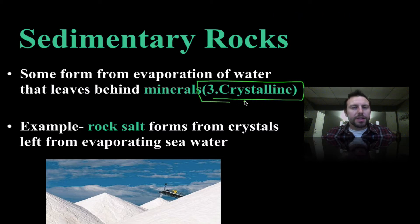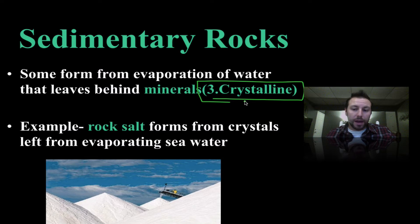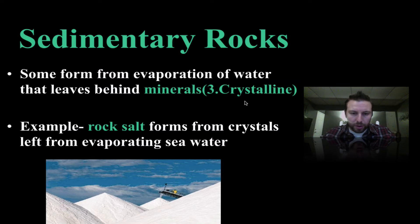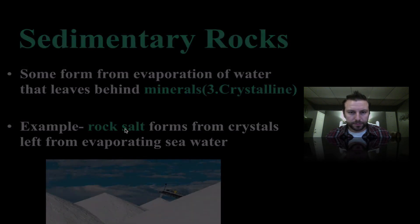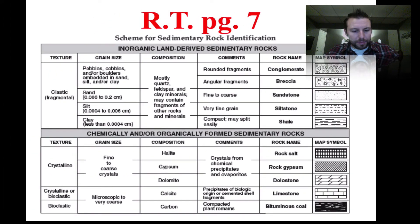A third type of sedimentary rock is known as crystalline sedimentary rocks. These form from the evaporation of water — when the water evaporates it leaves behind minerals, which come together and grow as crystals. One example most people know is rock salt: the water evaporates, leaves ions behind, salts form, crystals grow from those salts — and that's rock salt.